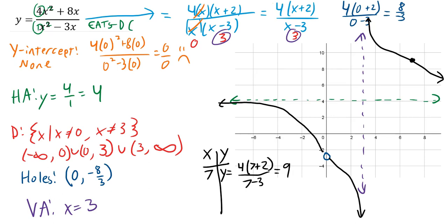Way off the graph—because we don't have much space here—it's going to get close to both the horizontal and vertical asymptotes.